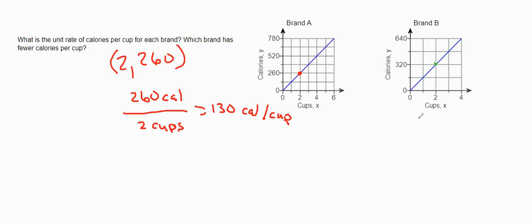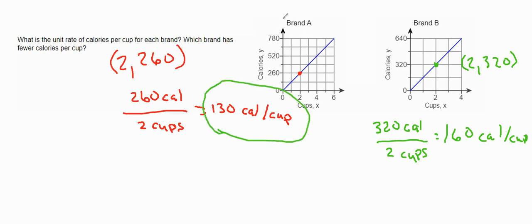And this other graph goes through the point (2, 320). So this would be 320 calories over two cups, and that's 160 calories per cup. So the looks can be kind of deceiving. It looks like brand B would have more calories per cup, but it's actually brand A has the fewer amount.